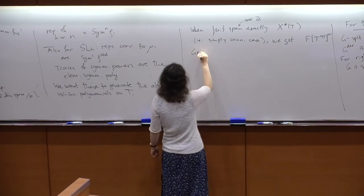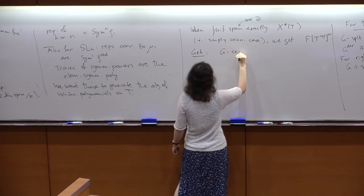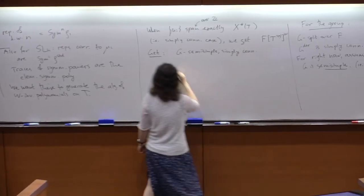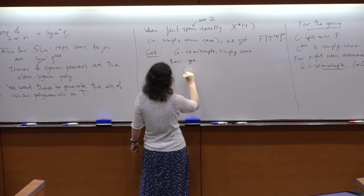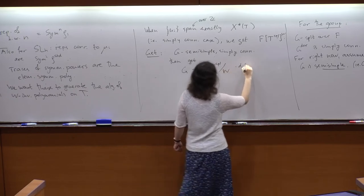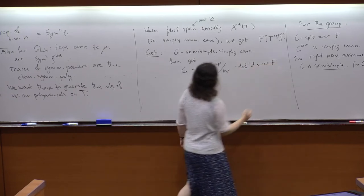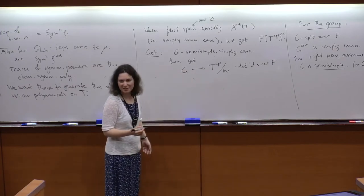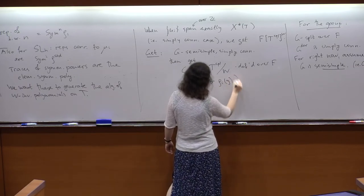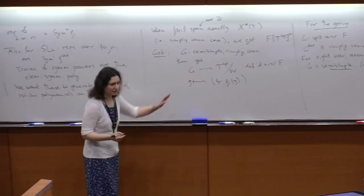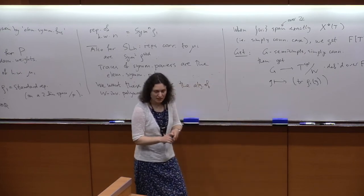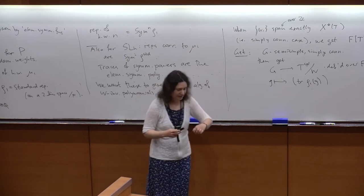The upshot: if G is semi-simple simply connected, we get a map from G to T_split mod W defined over F, given by the traces of rho_i(g) where rho_i are the rational representations with highest weights equal to the fundamental weights. For classical groups this is still essentially the coefficients of the characteristic polynomial.